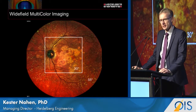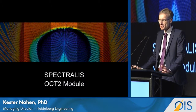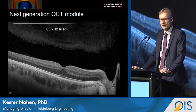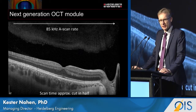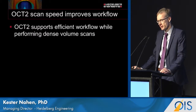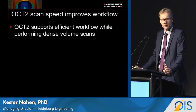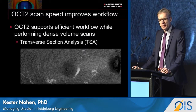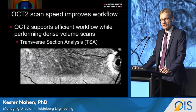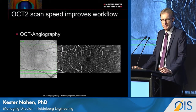The Spectralis OCT2 module is the next-generation OCT module, which increases scan speed from previously 40 kilohertz to 80 kilohertz, cutting the scan time roughly in half and expediting the patient examination. The OCT2 supports an efficient workflow while performing very dense volume scans, for example the cross-section analysis of the RPE and the choroid.